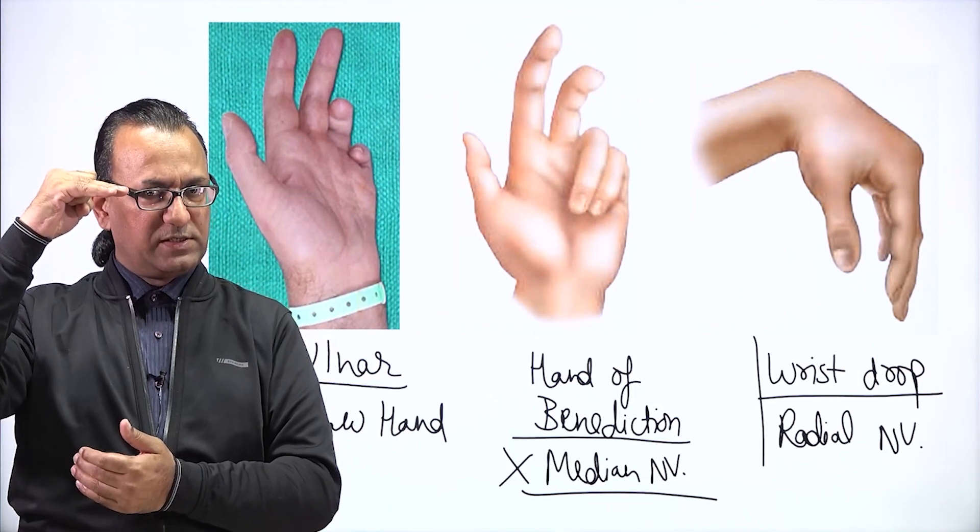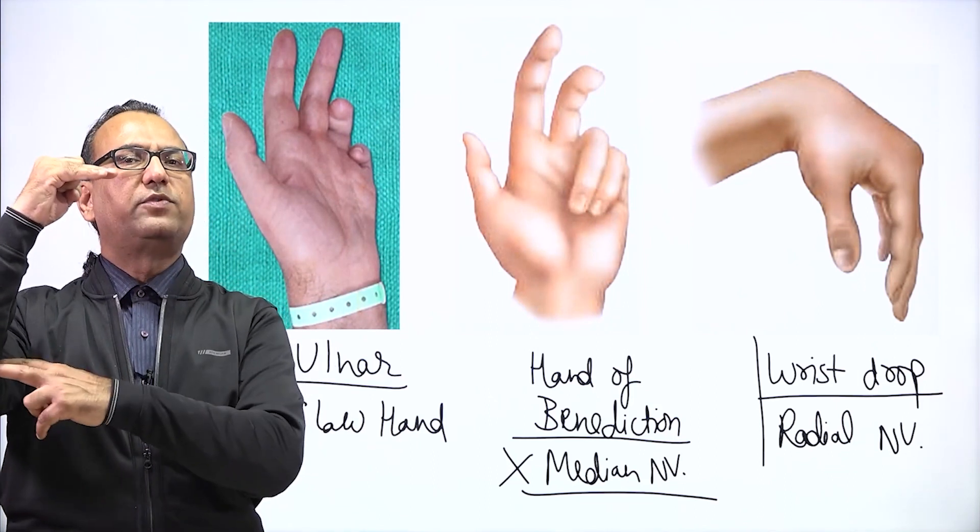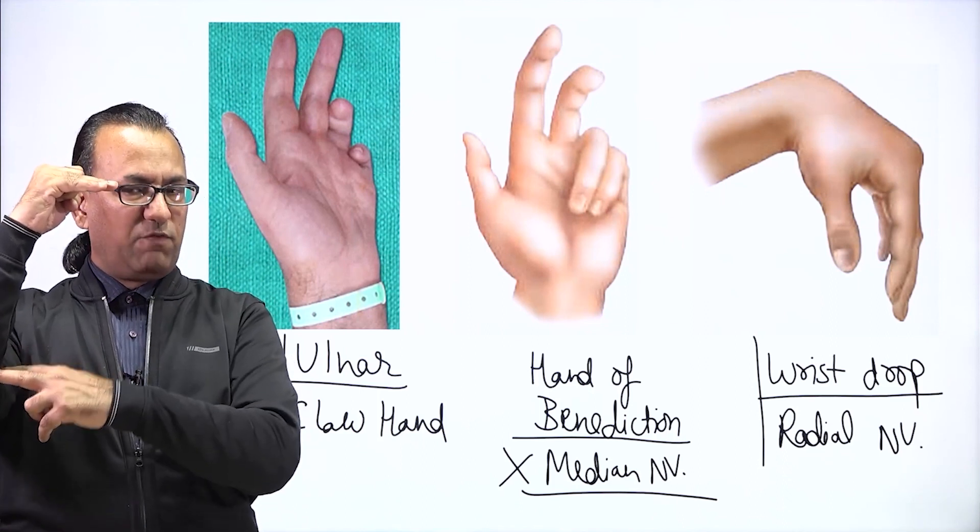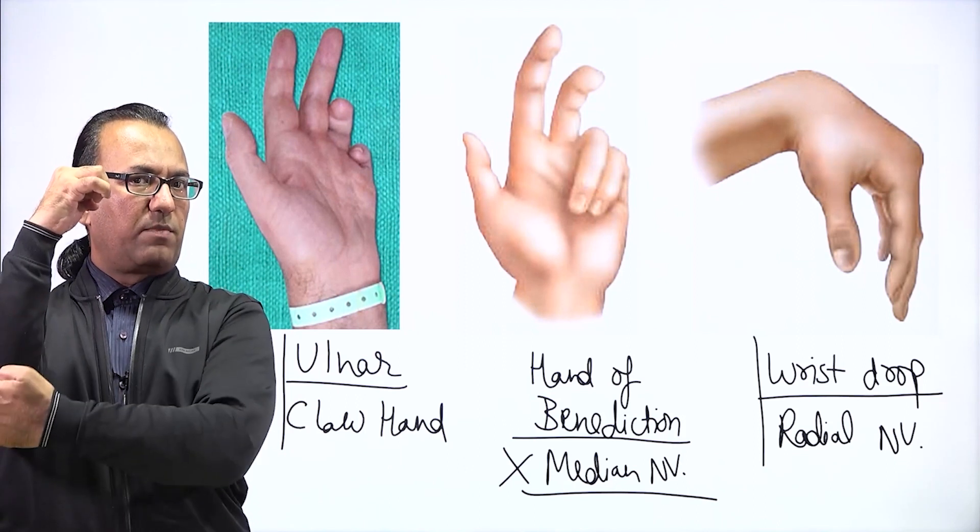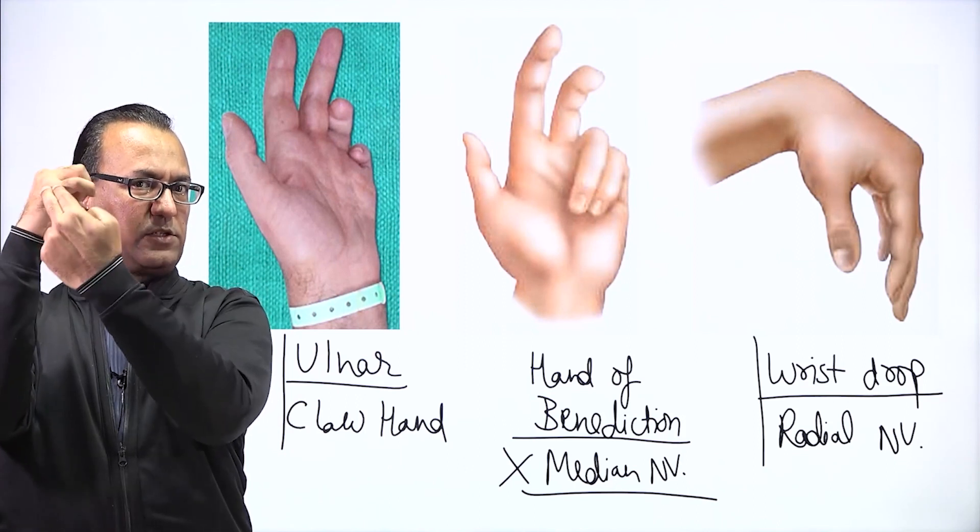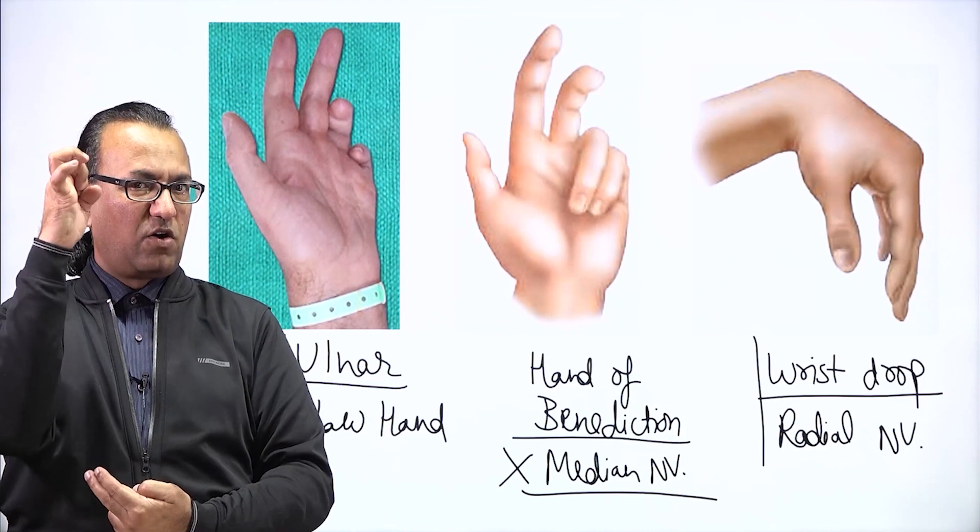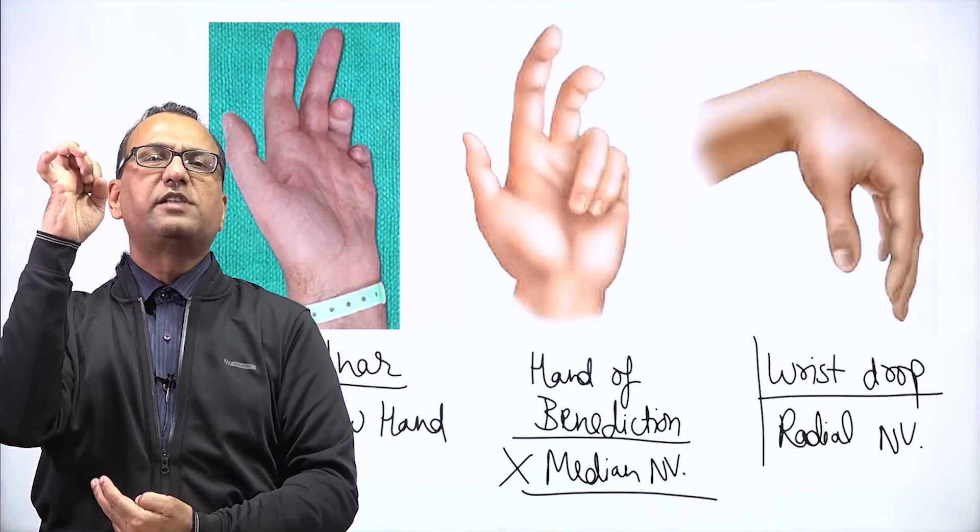Now one group of muscle is paralyzed, the other group is more powerful. The flexor digitorum profundus will be pulling the finger into flexion deformity, whereas extensor digitorum in the posterior forearm will pull the MCP joint into hyperextension, ulnar claw hand deformity. And it is persisting all the time.